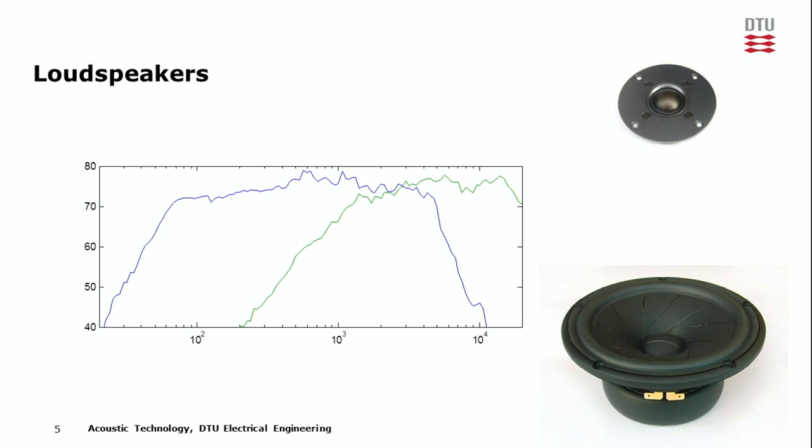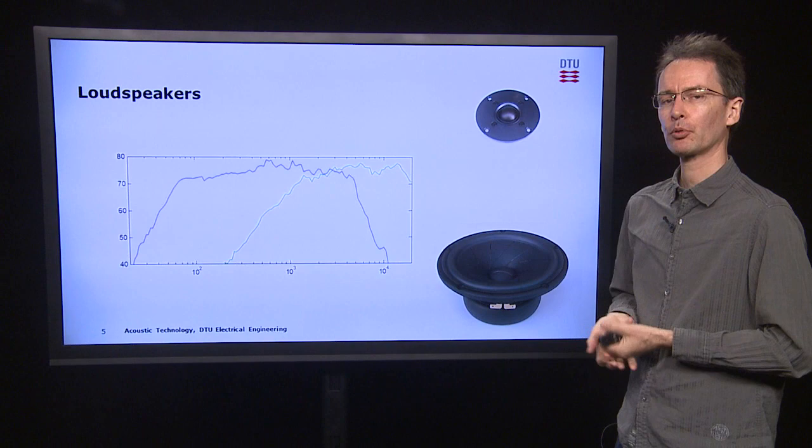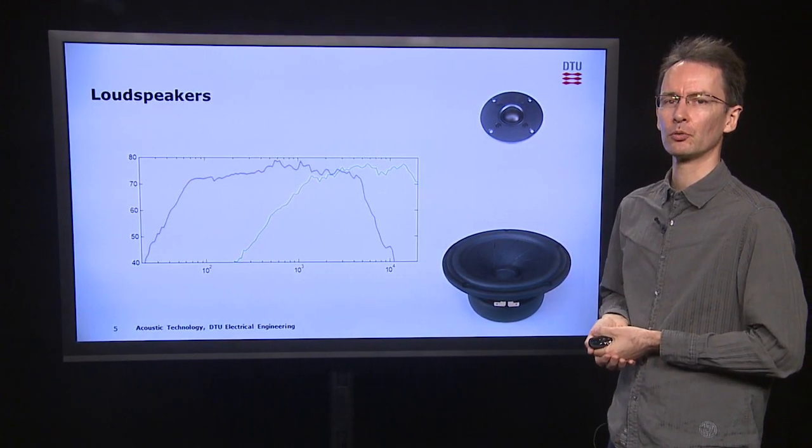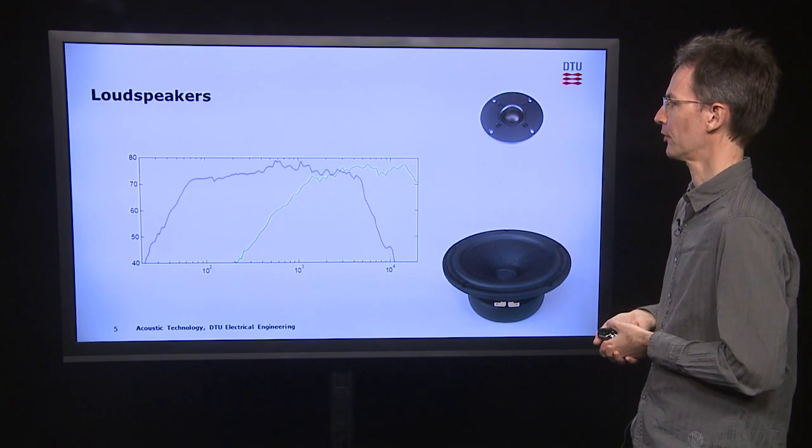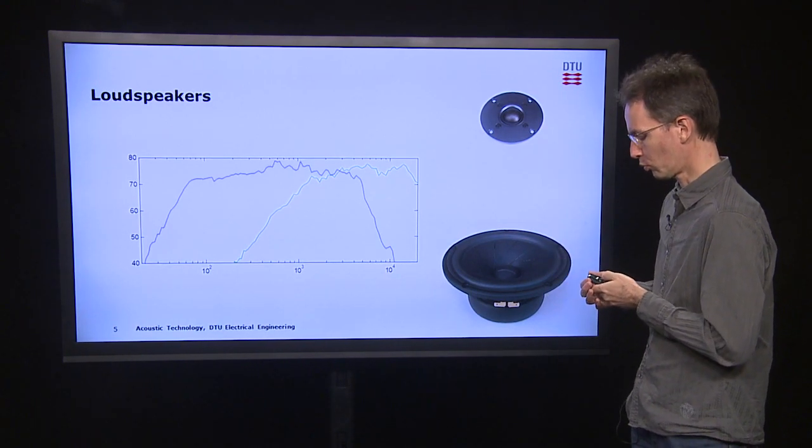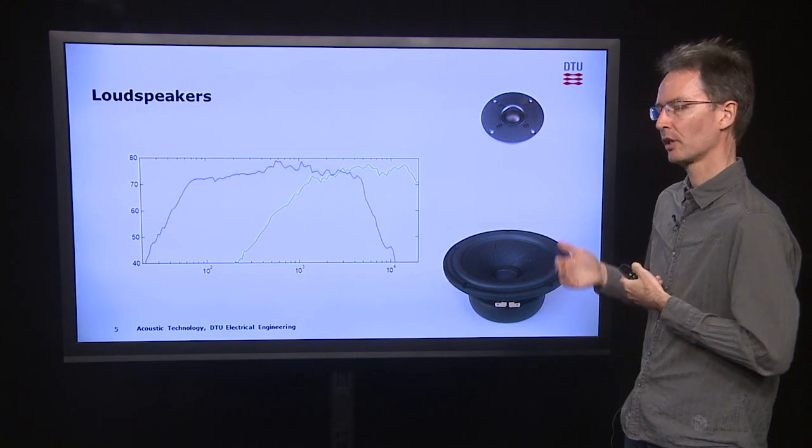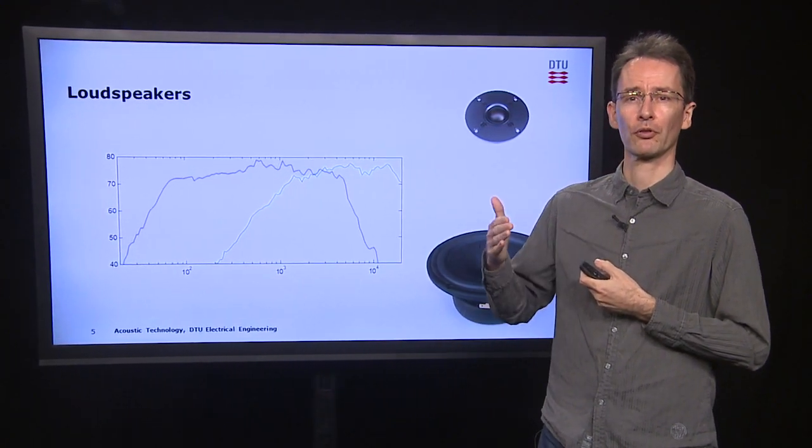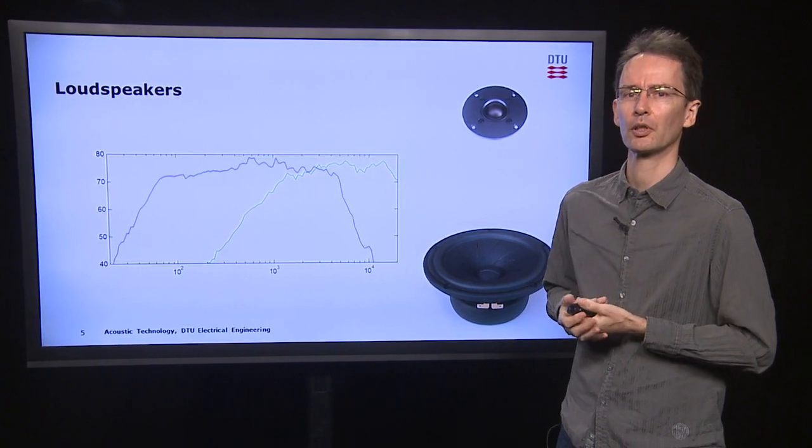If you compare the response shown here, which is measured in the anechoic chamber, and the microphone response we saw before, you will notice that we have much larger deviations here. There are several reasons for that, but the most important one is the fact that ideally we want the diaphragm of the loudspeaker to move back and forth like a piston. It does so at the low frequencies.